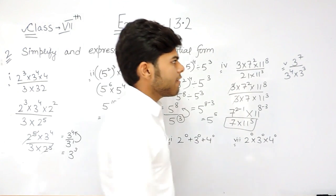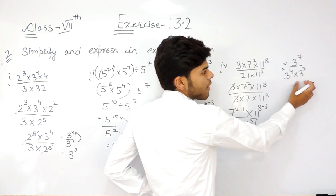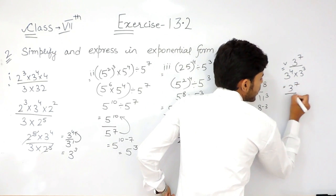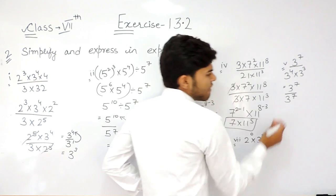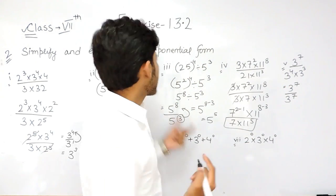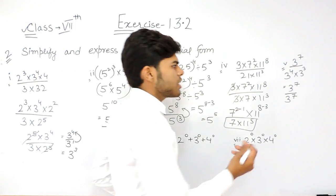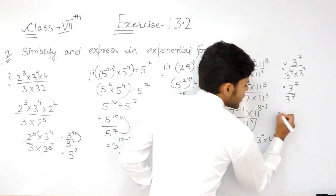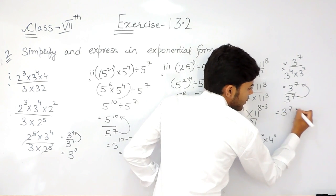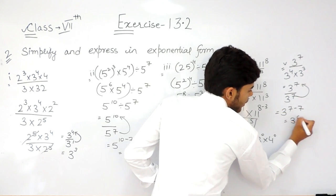Now part 5. In the denominator, the bases are the same, so the powers get added up. So this will be 3 to the power 7 upon 3 to the power 7. We can directly cancel this out and write 1. But it has specifically said to use the laws of exponents. So what we will do is: this 7 will go in the numerator, it will change its sign, so that will be 3 to the power 7 minus 7, which will be 3 to the power 0.